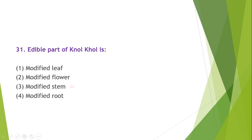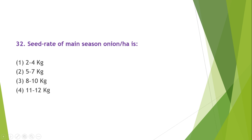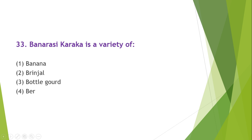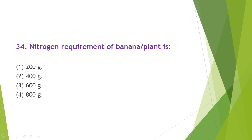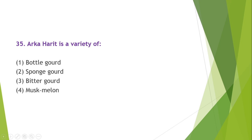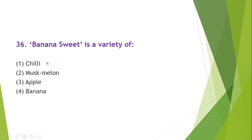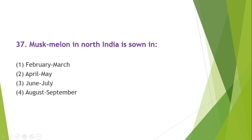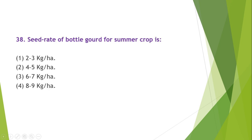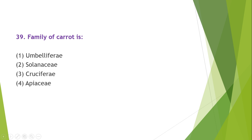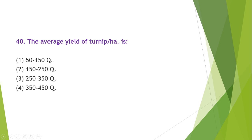The edible part of kohlrabi is modified stem. The seed rate of main season onion per hectare is 5 to 7 kg. Banarasi karaka is a variety of ber. The nitrogen requirement of banana per plant is 200 grams. Arka Harit is a variety of bitter gourd. Banana Sweet is a variety of chili. Musk melon in North India is sown in February to March. The seed rate of bottle gourd for summer crop is 4 to 5 kg per hectare.